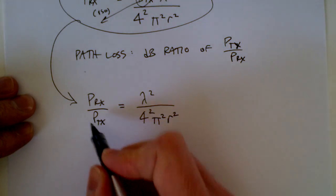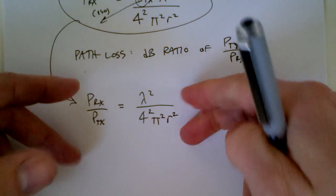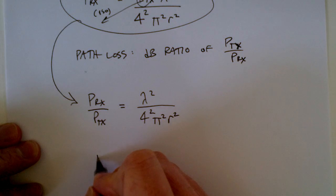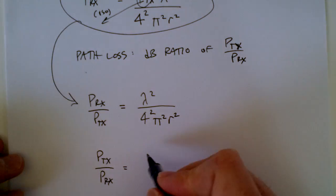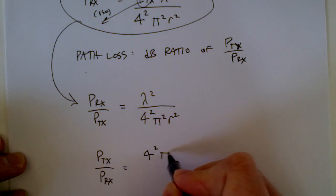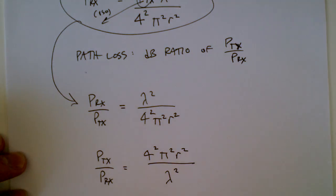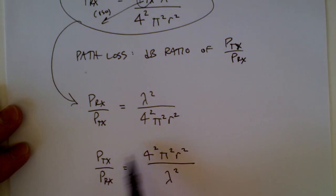That means I could rearrange these, I could just flip them like that. And say transmit over receive. So this is flipped, and then I flip these two. So 4 squared, pi squared, r squared over lambda squared. So I have this ratio here, and I have this ratio here.